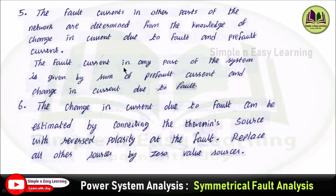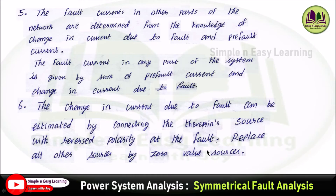Sixth step: this change in fault current in any part of the system can be estimated by connecting the Thevenin voltage source with reverse polarity at the fault point. By doing so, you can calculate the change in current due to fault. This is the basic six-step procedure for fault analysis using Thevenin's theorem.